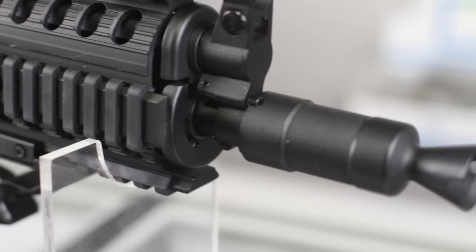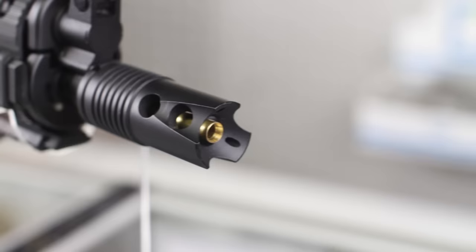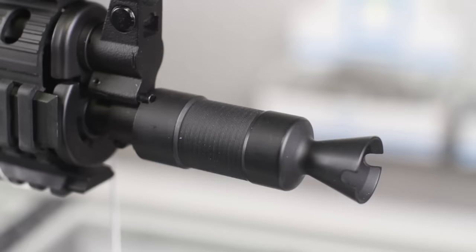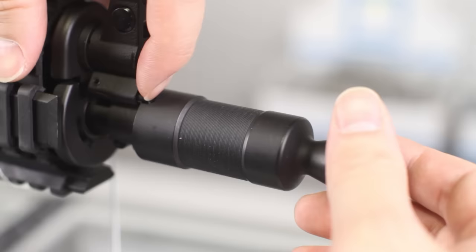Next up, let's switch out the flash hider. Nothing wrong with the stock one, but a flash hider is one of the easiest ways to change the look of your rifle. Most AK flash hiders come off in two pieces, so to speak. The flash hider itself is held in by a spring-loaded pin. Simply push in the pin and unscrew the flash hider.